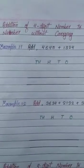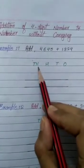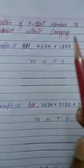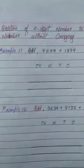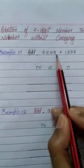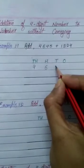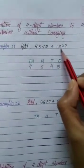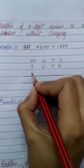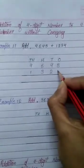First, we have to put them in their place values, which are 1s, 10s, 100s and 1000s. Since these are 4-digit numbers, we will write up to 1000s place. So 4,645 is 4 thousands, 6 hundreds, 4 tens and 5 ones. And 1,324 is 1 thousand, 3 hundreds, 2 tens and 4 ones.